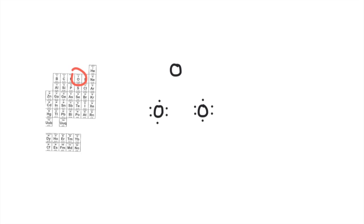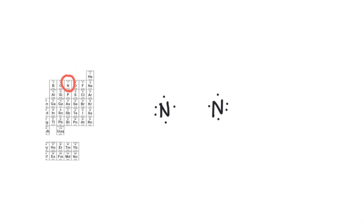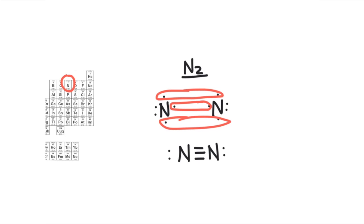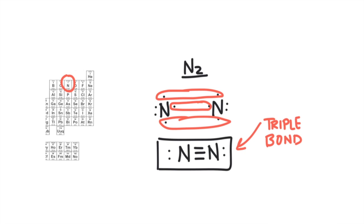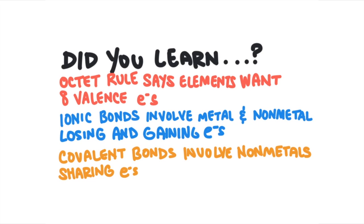What happens when oxygen bonds with another oxygen atom to make O2 gas? Each oxygen atom has 2 unpaired electrons, and the oxygens share both their unpaired electrons with each other — this creates a double bond. When nitrogen bonds with another nitrogen atom to make N2 gas, each nitrogen atom has 3 unpaired electrons, and they pair up all 3 to create a triple bond. To summarize: the octet rule states that elements want a complete valence shell of electrons. Ionic bonds form between metals and nonmetals when elements gain or lose electrons. Covalent bonds form when nonmetals bond with other nonmetals and share their valence electrons.